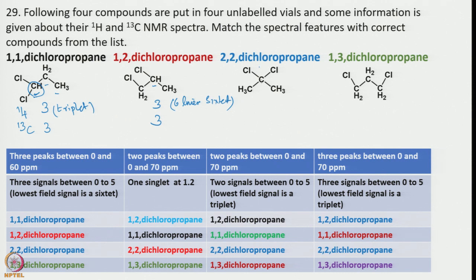Now let us look into the third molecule, 2,2-dichloropropane. You can see there is a C2 axis of rotation, so only half need be considered. These two groups are identical, meaning only one signal will be there for the methyl groups, and 2 carbon signals will be there in 13C NMR. Only one 1H NMR signal — this is unique compared to the rest.